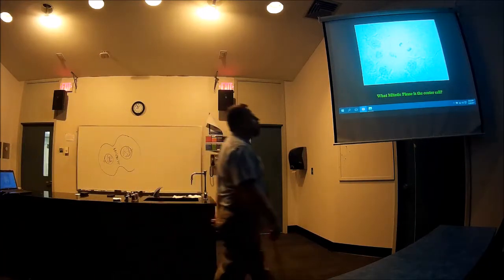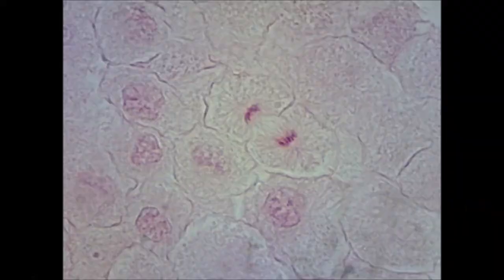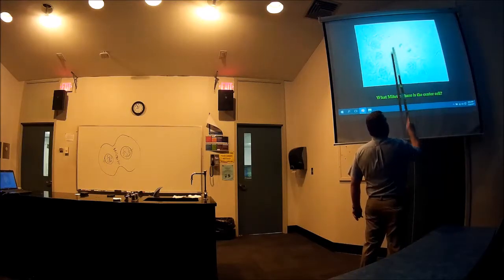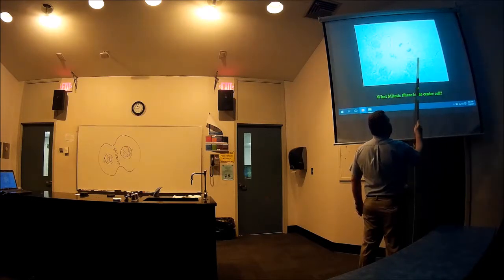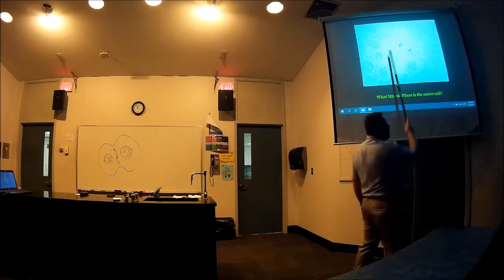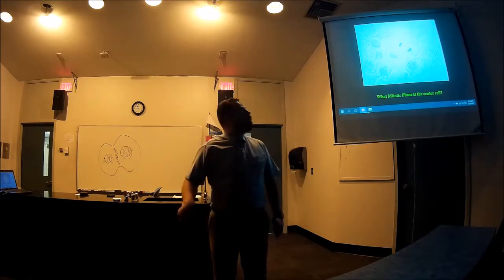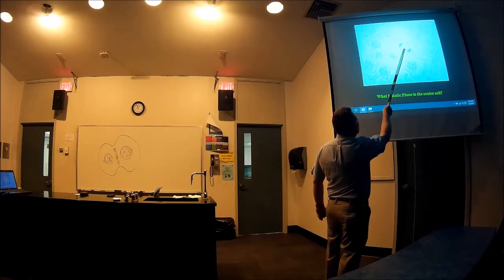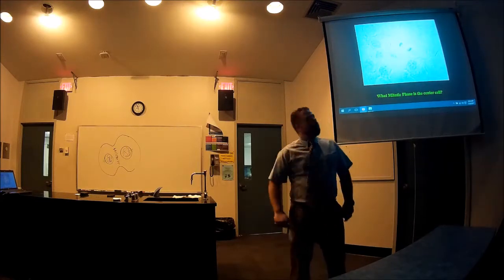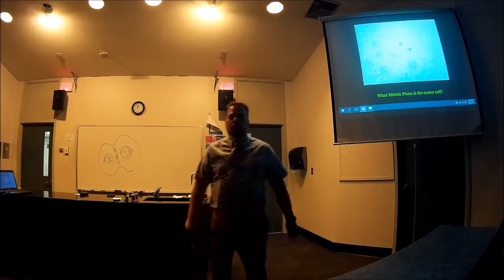Let me show you what you'll be seeing under the microscope. Here's a cell — this one is in interphase over here. But this one is still one cell. Do you see a furrow? No. You see the chromosomes being pulled to either side. So what is this? Anaphase.